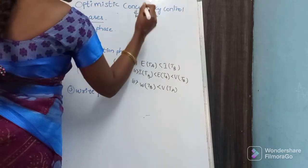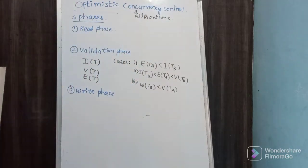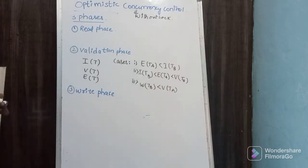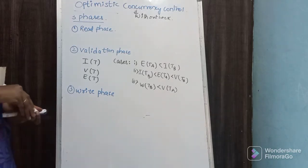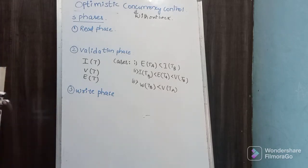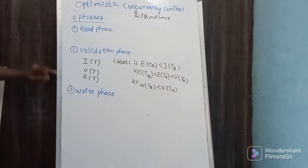This optimistic concurrency control, without using any locking technique, allows you to achieve serializability and concurrency control. How to achieve concurrency control without using locking? In optimistic concurrency control, we have three phases: the first phase is the read phase, the second phase is the validation phase, and the third phase is the write phase.